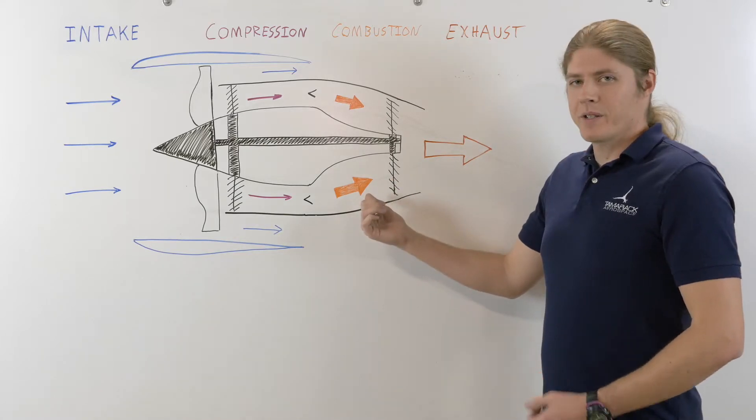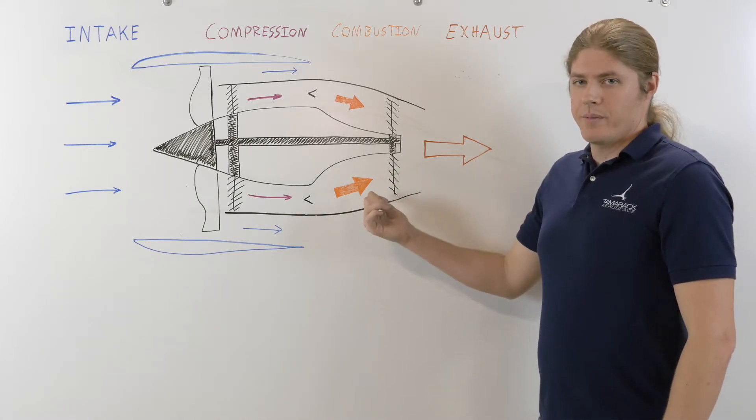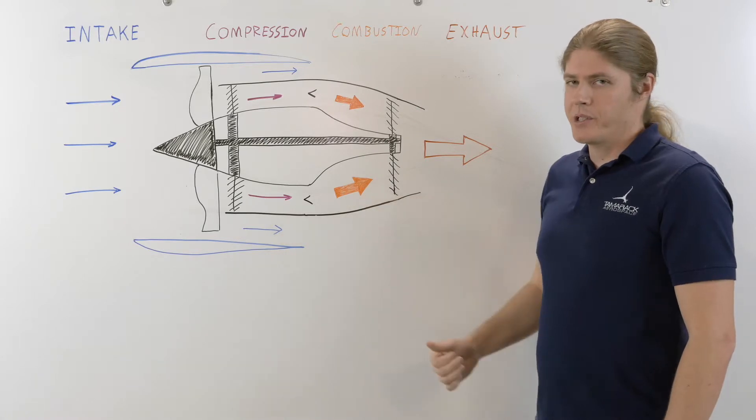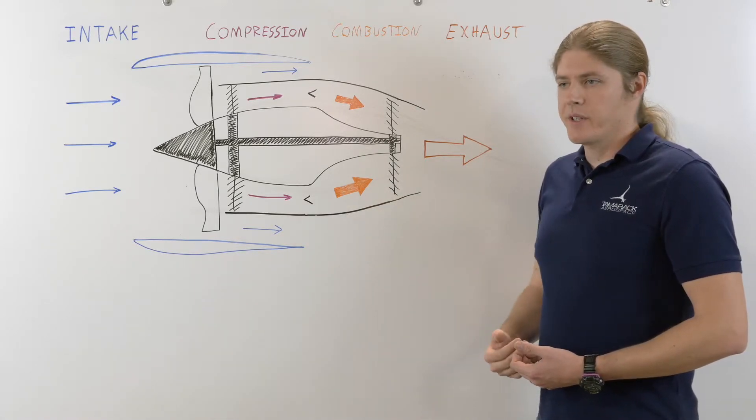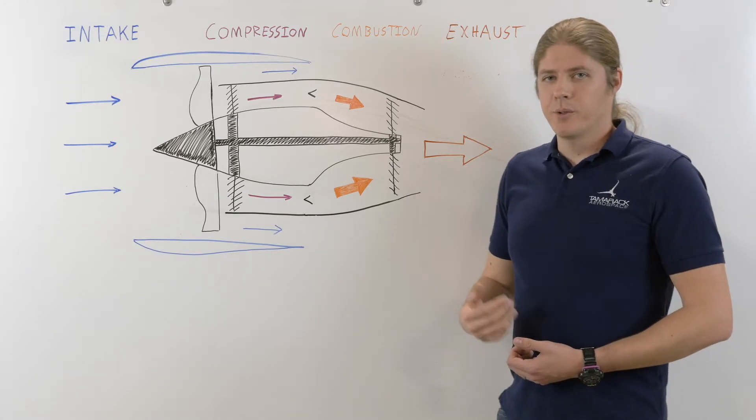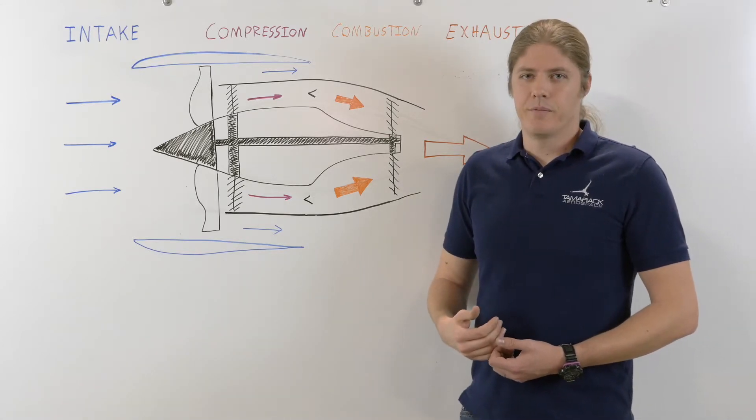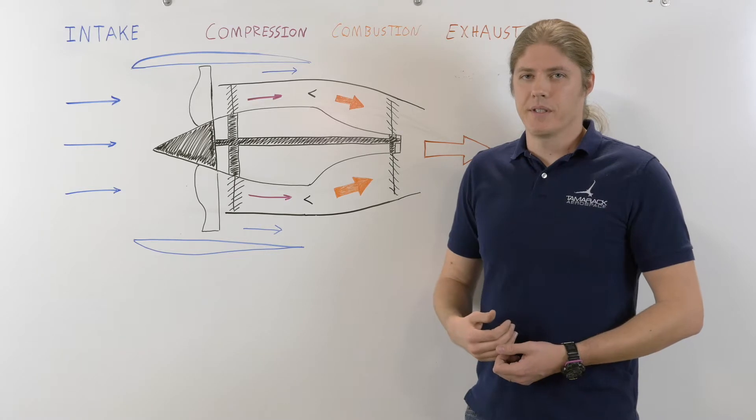So, as you might expect, it produces a heck of an explosion. The pressure is spiked, and as is the temperature. Temperatures for a jet engine typically operate in the 1400 to 1500 degree Fahrenheit range, about 700°C.